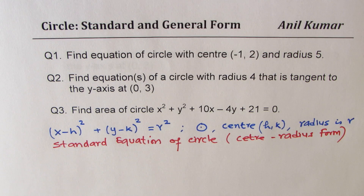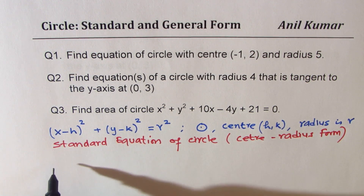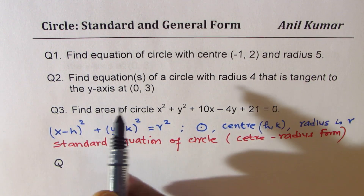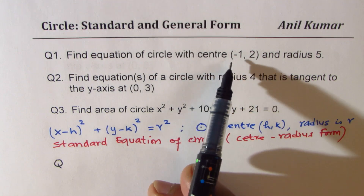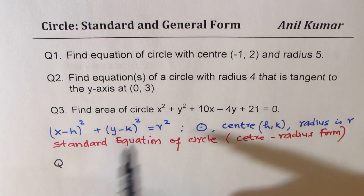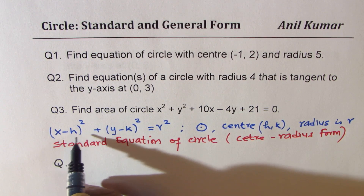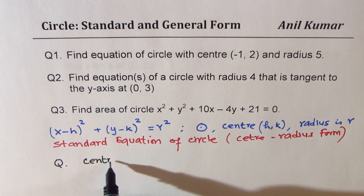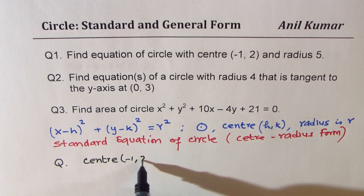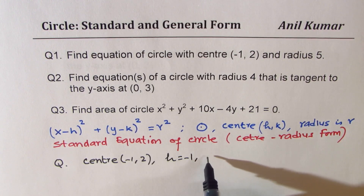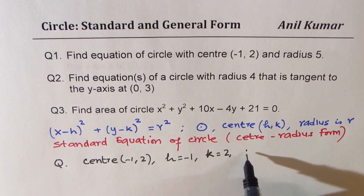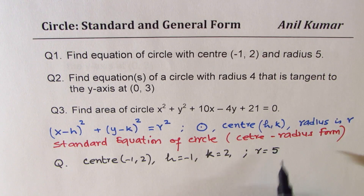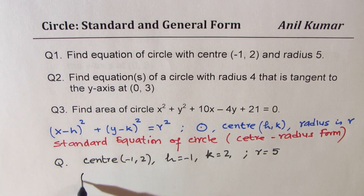Now let us answer these questions. Question number one is straightforward — we need to write the equation of a circle with the given center and radius. In this case the center is at (-1, 2), which means h = -1 and k = 2.